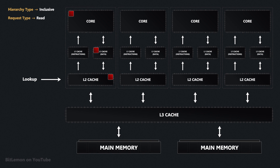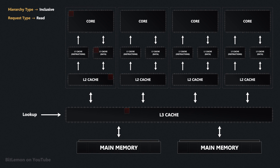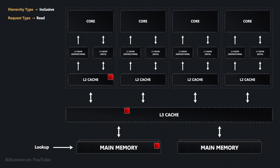If the address is not found in L2, the search continues in the largest cache, L3. The same idea applies here — if the address is found in L3, it is copied to L2, then L1, and finally forwarded to the processor core. If none of the caches contain the address, the read request is sent to main memory. The data from main memory is retrieved, and in this fully inclusive system, it is copied to L3, L2, and L1 before being forwarded to the processor core.